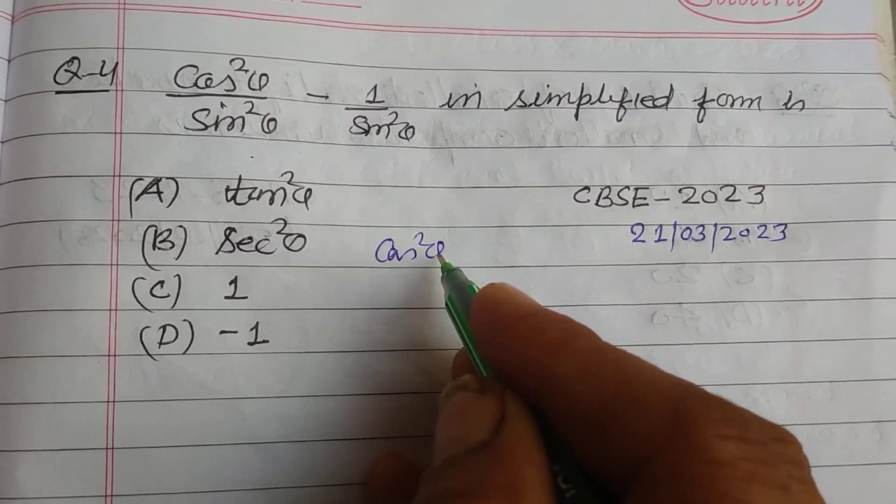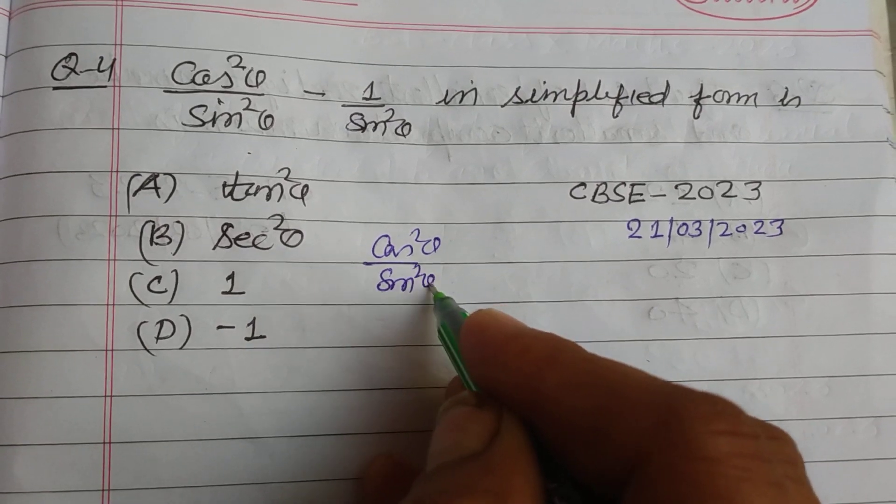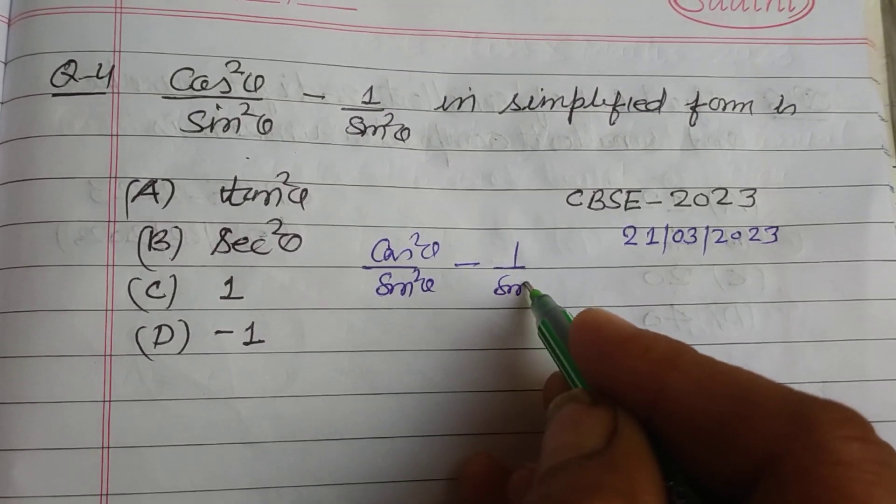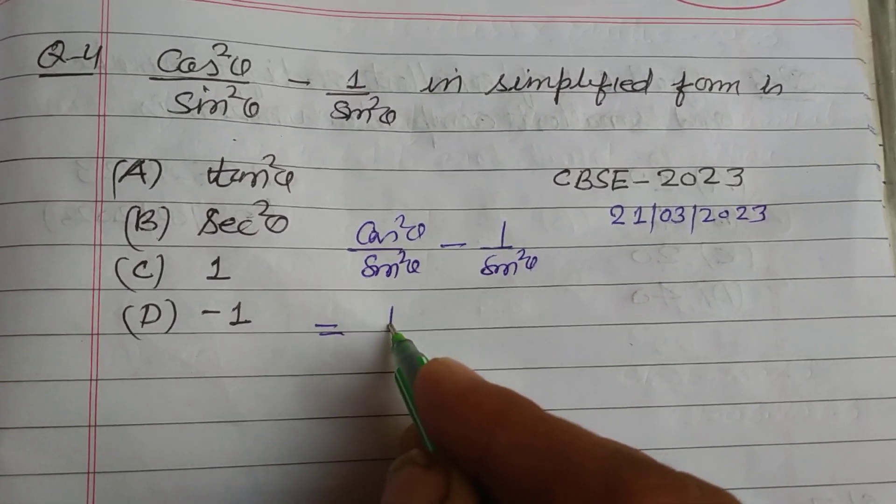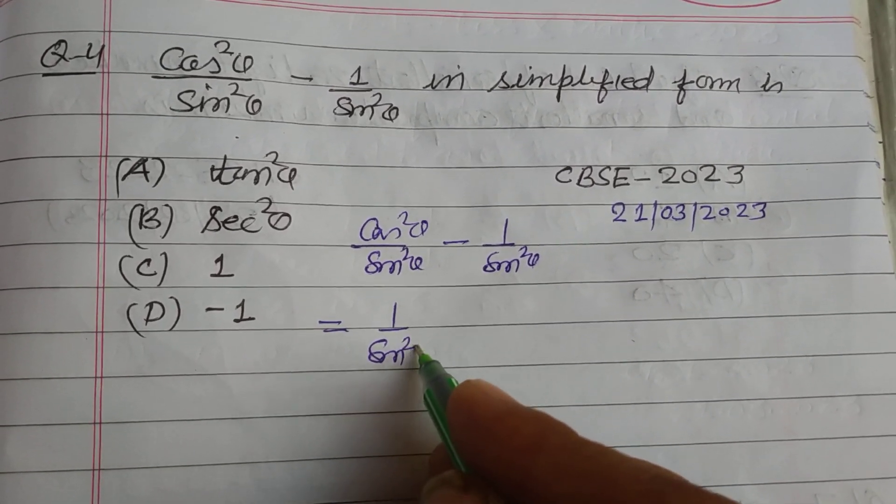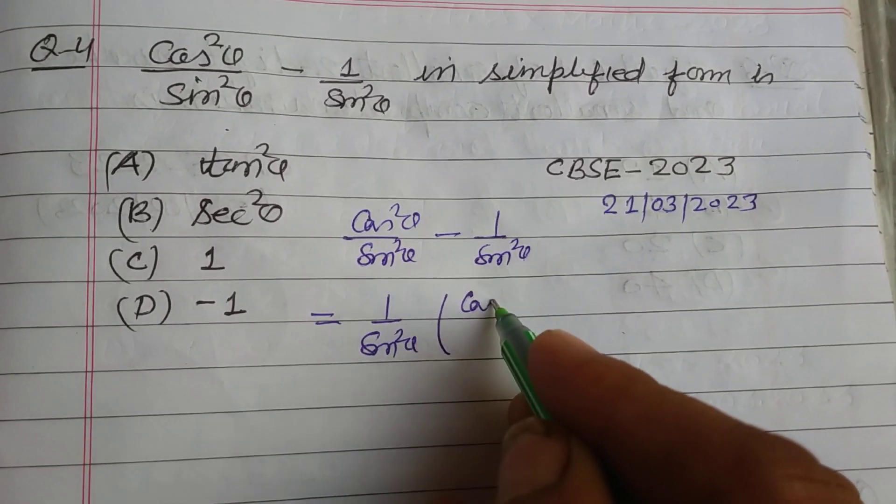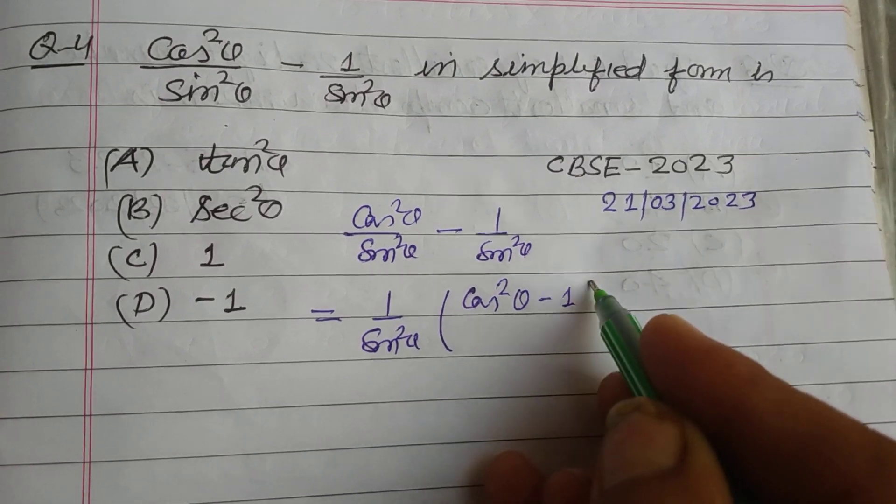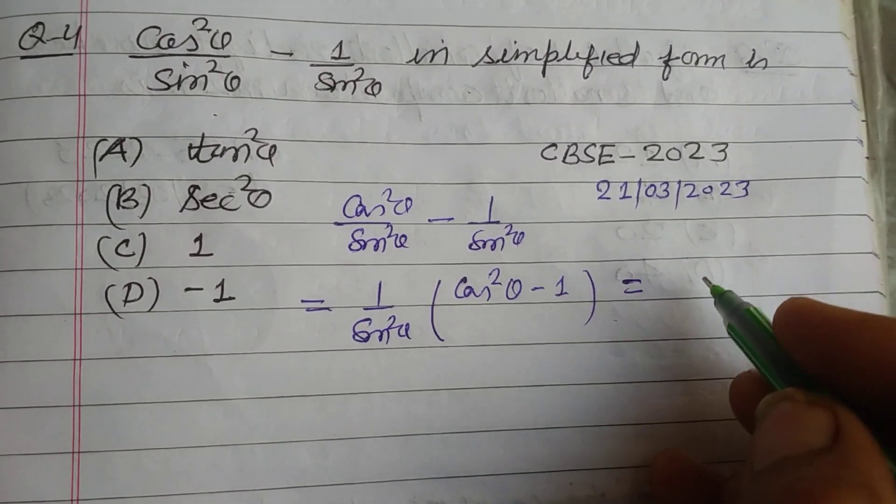So student, cos square theta upon sine square theta minus one upon sine square theta. Take common from numerator one upon sine square theta, you will get cos square theta minus one. So what is cos square theta minus one?